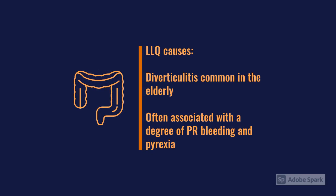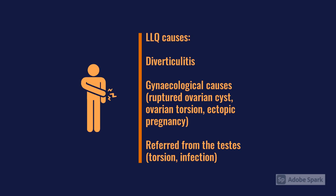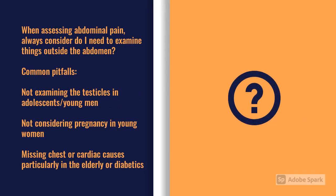In someone over 50, the first thing to consider in the left lower quadrant is diverticulitis, often associated with PR bleeding, rectal bleeding, and pyrexia. Other important causes include gynaecological pain such as torsion, ectopic pregnancy, and cysts, and referred pain from the testicles. Atypical renal colic or an unusual presentation of triple A should also be considered. Importantly, GU presentations should prompt examination beyond the abdomen — particularly in young men and pubescent males with lower abdominal pain, always check the testicles to avoid missing a torsion.